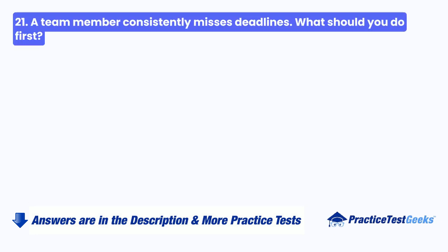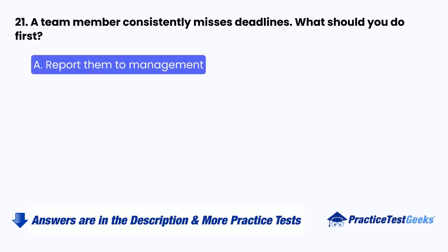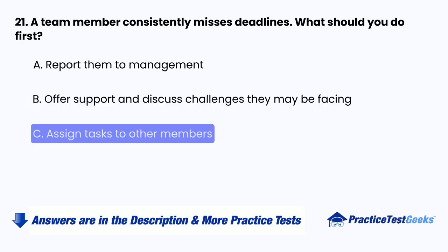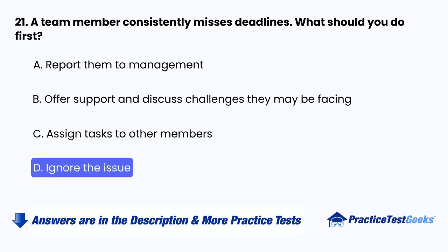Question 21: A team member consistently misses deadlines. What should you do first? A. Report them to management. B. Offer support and discuss challenges they may be facing. C. Assign tasks to other members. D. Ignore the issue.